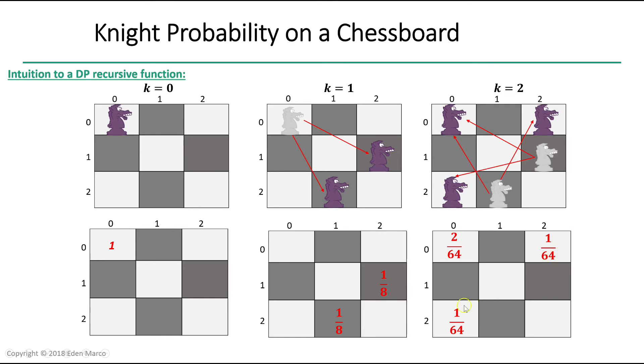Because we can get to the top left entry with two different paths, the probability will be 2 times 1 over 64, which is equal to 2 over 64.